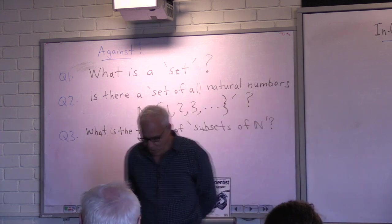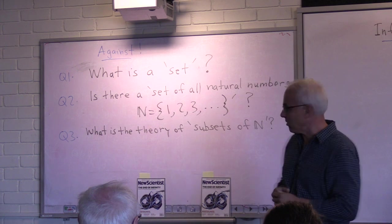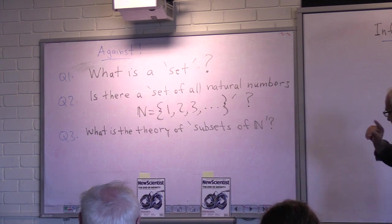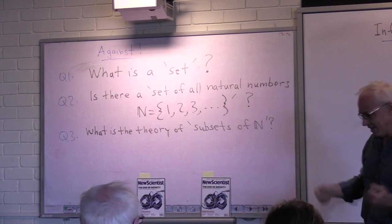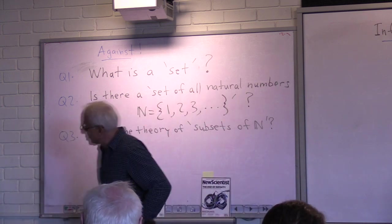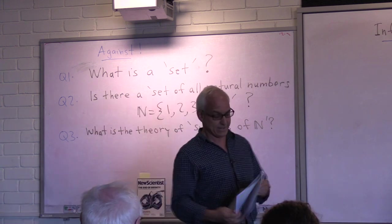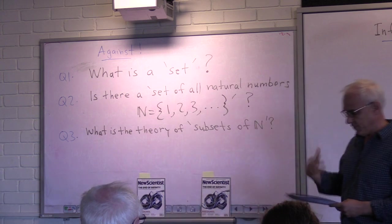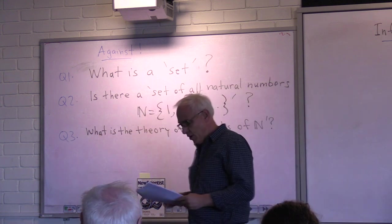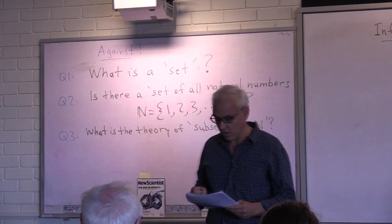I'd like to pose the against side by framing in terms of three questions in hierarchical order. I'm going to talk about these three questions: What is a set? Is there a set of all natural numbers? And what's the theory of subsets of N? That'll give me a chance to say a few things about the problems. There are in fact serious problems, and they start with Cantor's 1874 definition of what a set is. His definition was that a set is a gathering together into a whole of definite distinct objects of our perception or of our thought, which are called elements of the set.